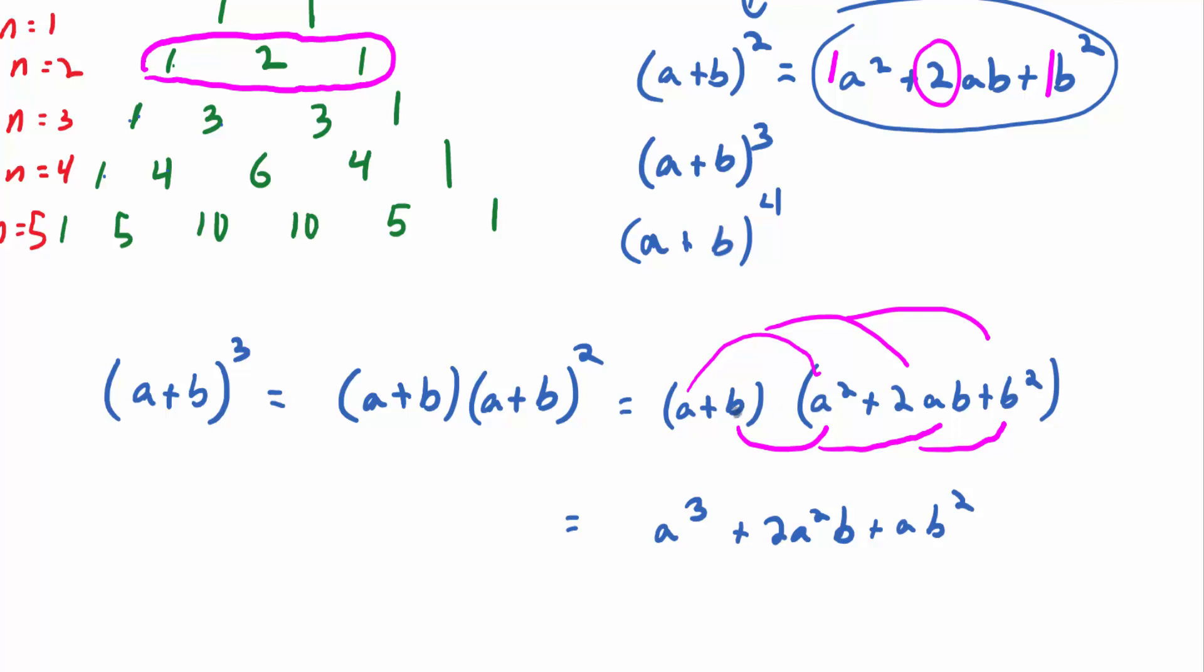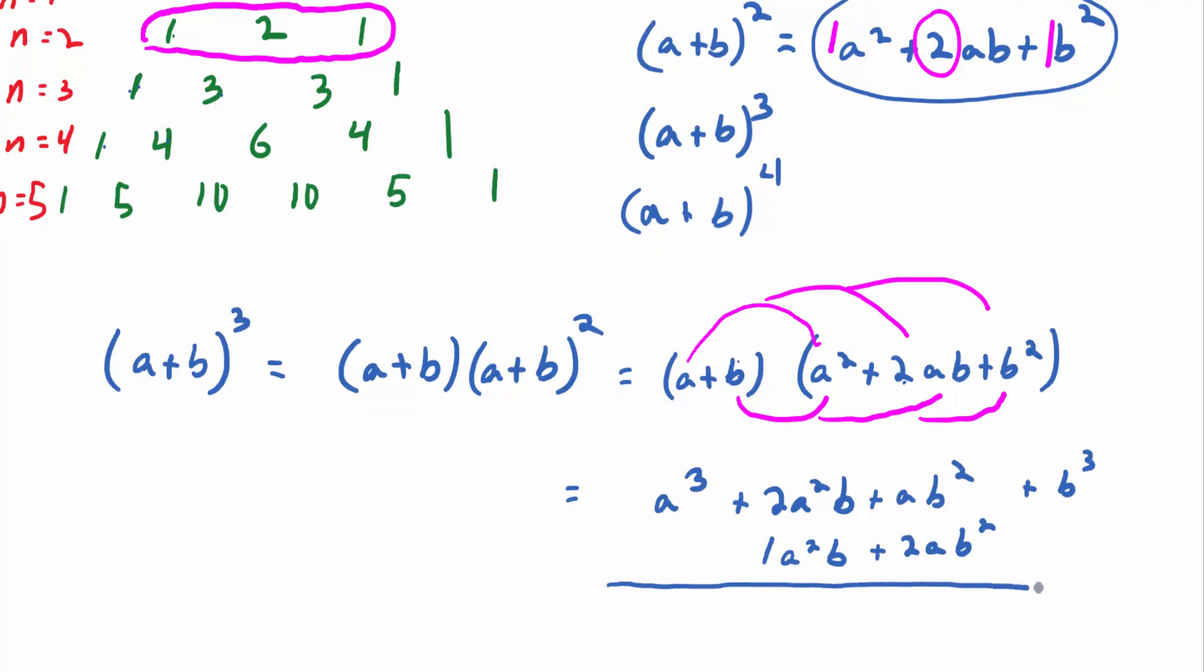So b times a² is the same as what? It's the same as a²b, right? So I'm going to line it up with its like term, a²b right there. So distribute b to a², I get a²b if I turn the multiplication around. Distribute b to 2ab, what do you get? 2ab². Plus 2ab². Distribute b to b² and you get b³. Add up the like terms, I'm adding vertically here. You end up with a³ + 3a²b + 3ab² + b³.